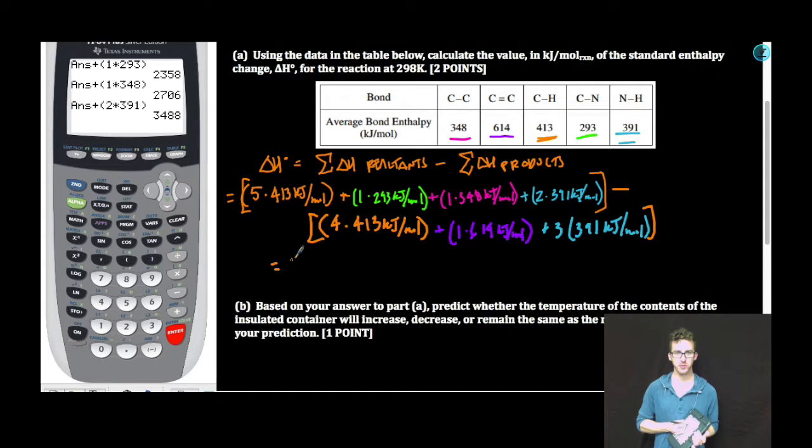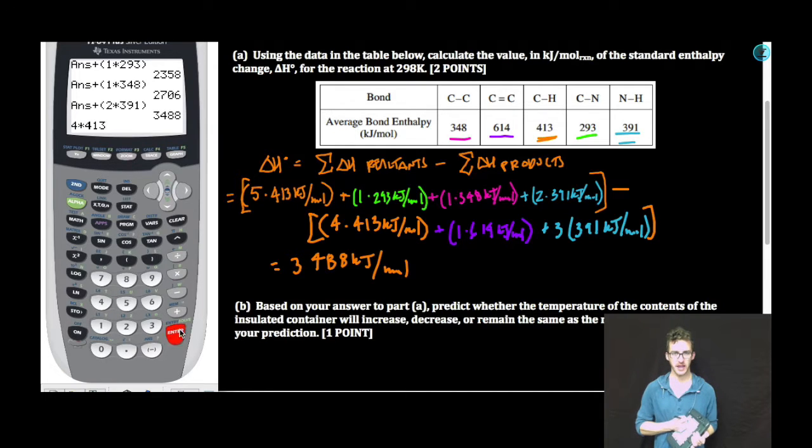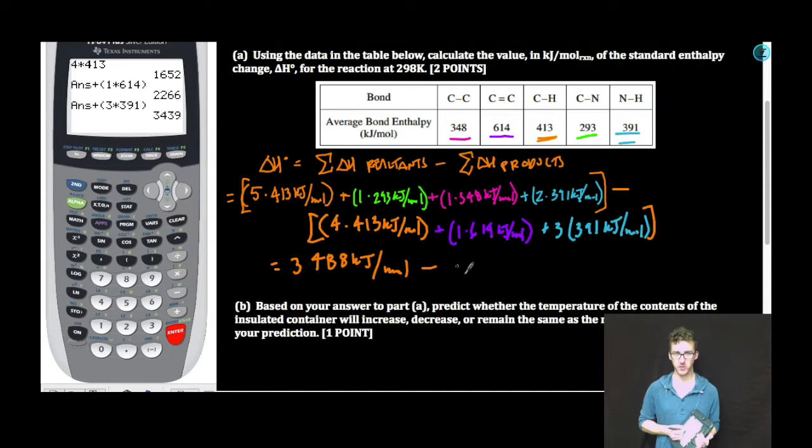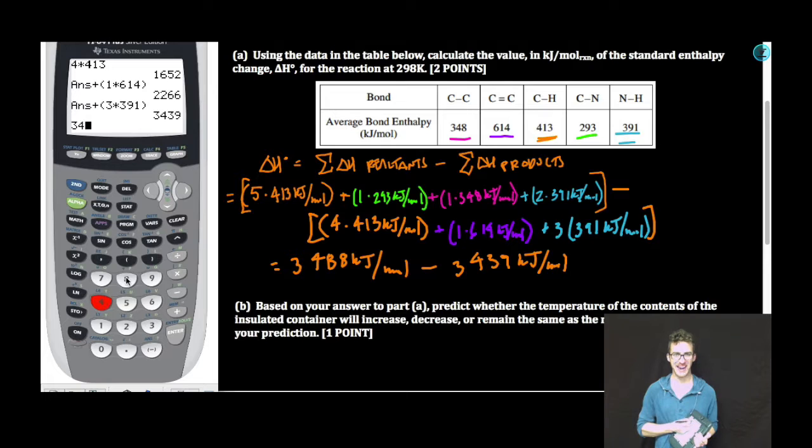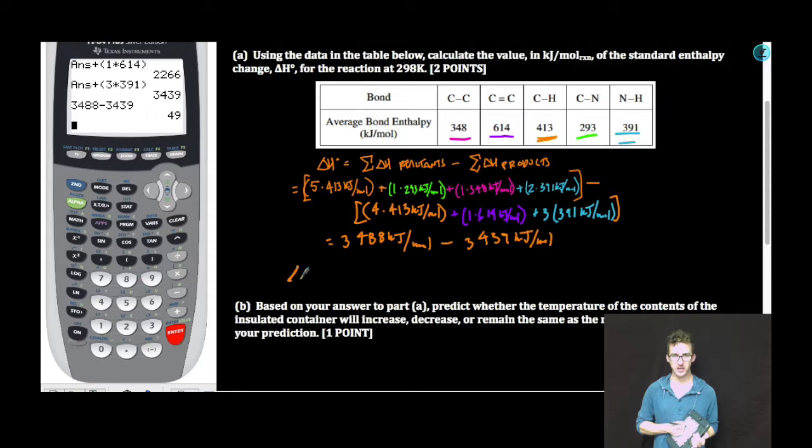We've got 3,488 kilojoules per mole as the sum of all our reactant bond enthalpies. Back to the calculator. 4 times 413, plus 1 times 614, plus 3 times 391. So the sum of all our product bond enthalpies, 3,439 kilojoules per mole. A quick subtraction, 3,488 minus 3,439.